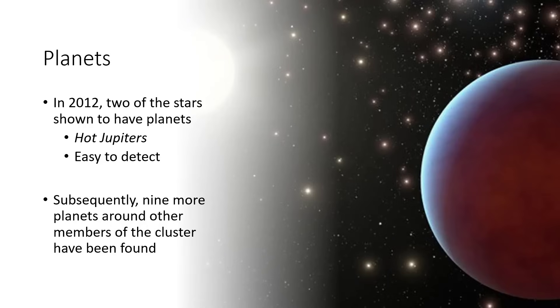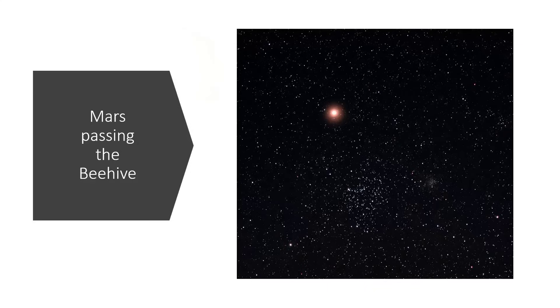Just to end up with the other interesting thing about the Beehive Cluster, Praesepe, is that it sits roughly on the ecliptic plane - so the path that the sun and the planets take through the sky as they go around passes through or very close to the Beehive Cluster. This is the planet Mars here passing by the cluster. Indeed, several of the other planets have been spotted going right across the face of it, which makes for a nice photograph.